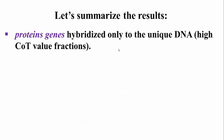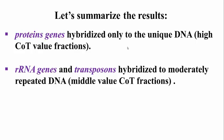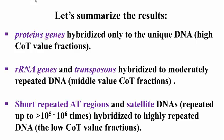The genes for proteins hybridize only to unique DNA found in the high COT value fractions. Ribosomal RNA genes — and also transposons — hybridize to moderately repeated DNA in the middle COT value fractions. Short repeated AT-rich regions and satellite DNAs, which can be repeated up to 100,000 to a million times, hybridize to the low COT value fraction — that is, to the highly repeated DNA fraction.